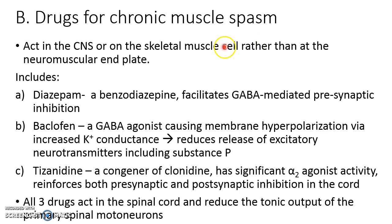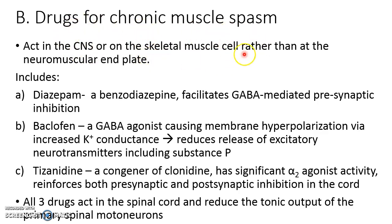Moving on to drugs used for chronic muscle spasm — these drugs act in the CNS, specifically the brain and spinal cord, or on the skeletal muscle cell itself. Rather than acting at the neuromuscular end plate, they act at the CNS level or on the skeletal muscle cell.